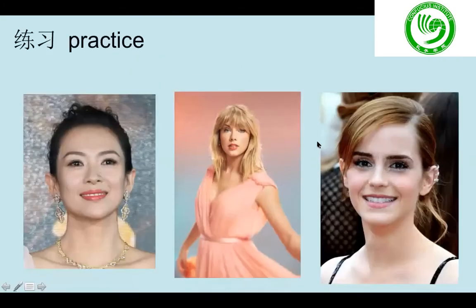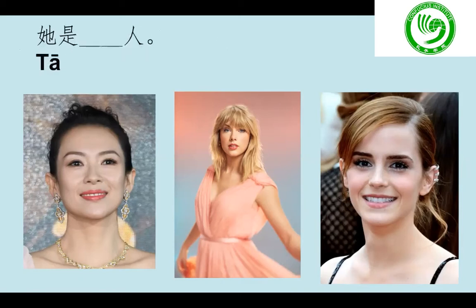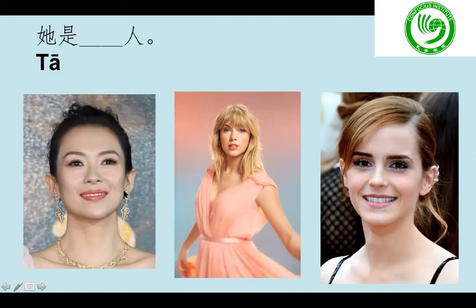很好. Now let us do a little bit of practice, 练习. 你认识她吗? 她是谁? 她是张子怡. So now we are not going to use 'I am' 我是, we are going to use 'she is' 她是. She is Chinese, she is British, she is American. We just need to say 她是. For example, 张子怡: 她是中国人. Then Taylor: 她是美国人. Emma: 她是英国人. Now I am going to point the picture, you please say the sentence. 很好.